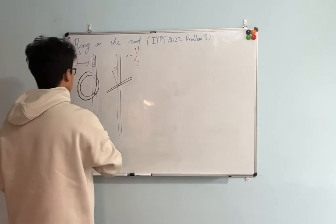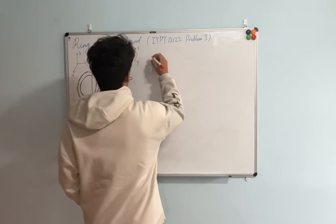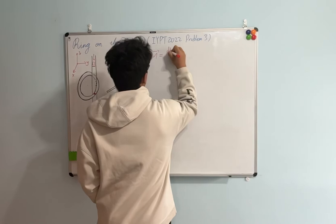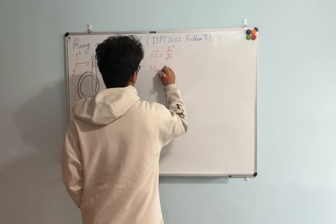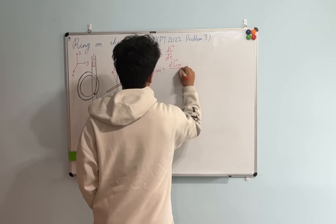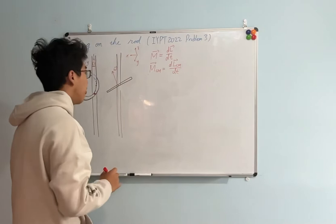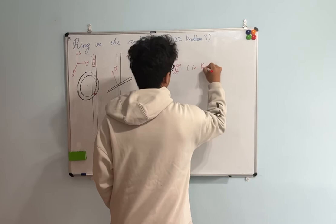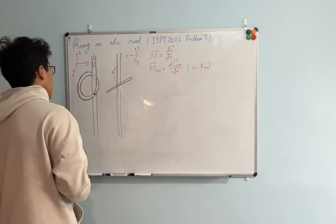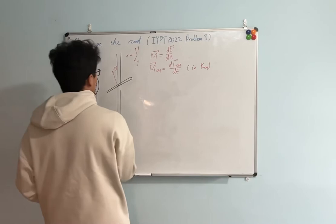That is one tricky part during measurement, but not the most confusing part. To consider the precession, we use the theorem of angular momentum, which says the torque exerted on the ring equals the rate of change of angular momentum. This also holds in the reference frame of the center of mass: M_cm equals dL_cm/dt, where M_cm is the torque and L_cm is the angular momentum relative to the center of mass.